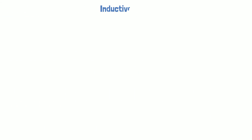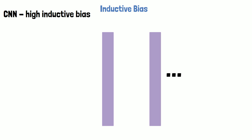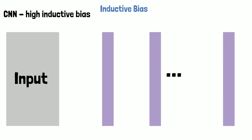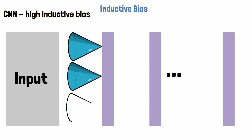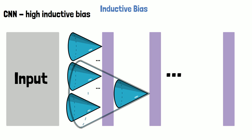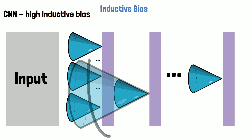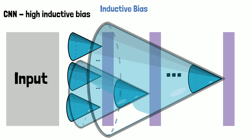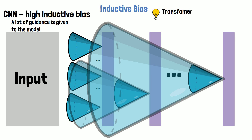An interesting observation about vision transformers is their reduced inductive bias compared to conventional neural networks. With CNNs we have high inductive bias — for a given input, each part in the first layer has a local view on the input image, where each part looks at a different region. In the following layers each part has a local view above the previous layer's output, but its receptive field grows larger over the input image. As we move towards the last layer, each part has a very wide receptive field and can take into account information from the entire image, so we provide a lot of guidance to the CNN regarding how to process the image. This is unlike vision transformers, where thanks to self-attention each patch token can attend to any other token in every layer, so we provide much less guidance to the model.